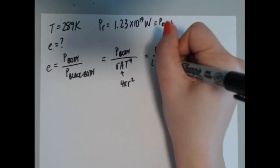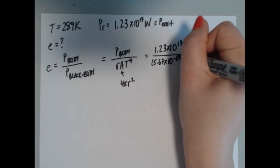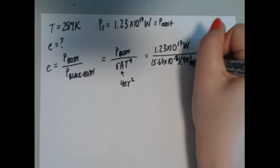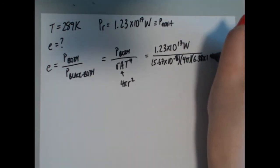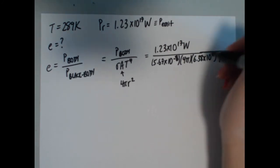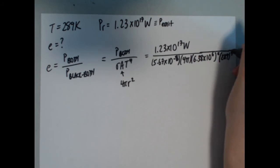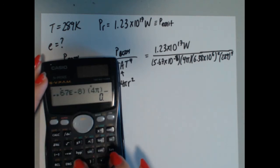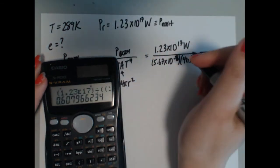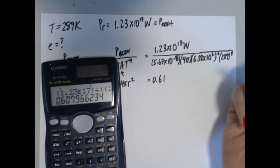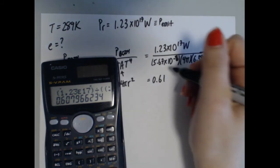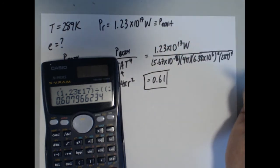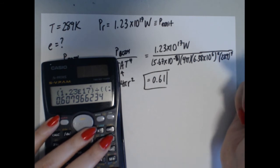So emissivity equals 1.23 × 10¹⁷ divided by sigma AT⁴: that's 5.67 × 10⁻⁸ times 4 pi times (6.38 × 10⁶)² times 289⁴. Entering all of this gives 0.607, approximately 0.61. This is the emissivity of the Earth.